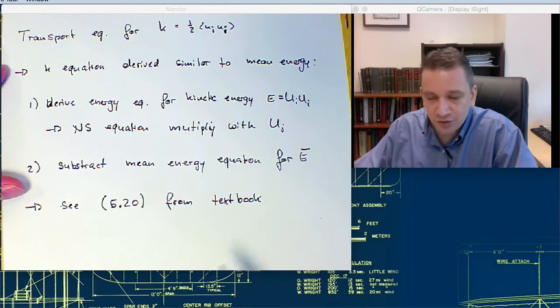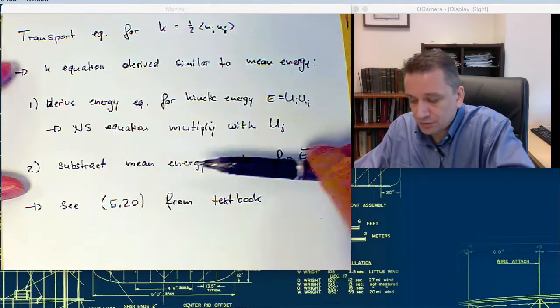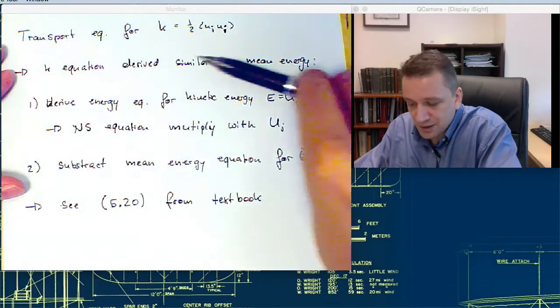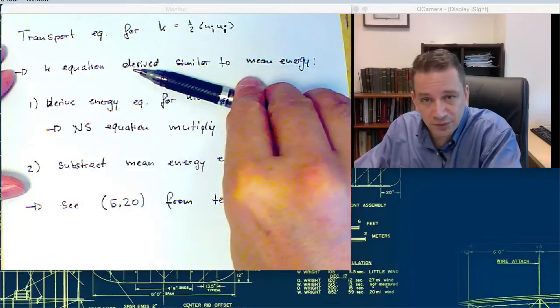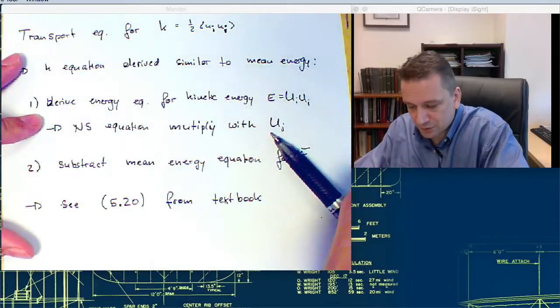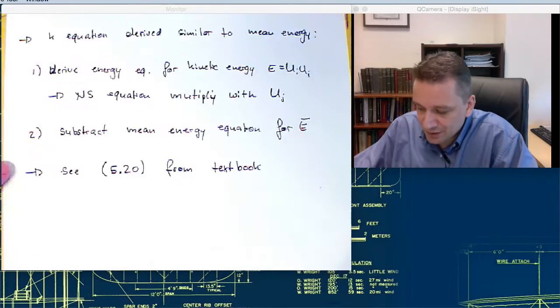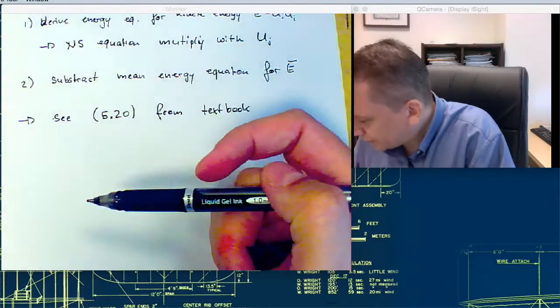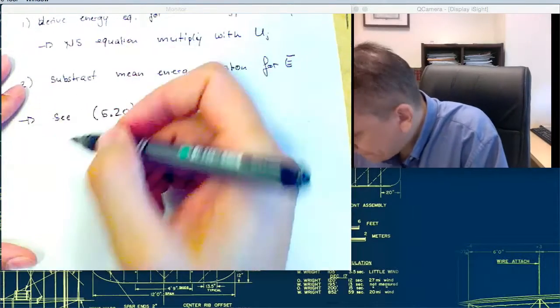And the solution that is online, everything is explained over a few pages. I just want to focus now on the result, because the result becomes a bit more important. So rather than going through each of these steps, I want you to know how do you derive it. The same way that you've done that already for the mean equation, you multiply it with the mean flow field with u. And then you're subtracting the mean energy. And then you get the following equation.